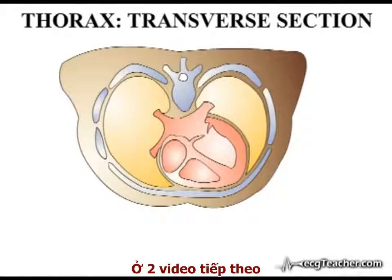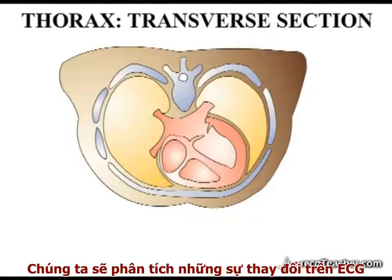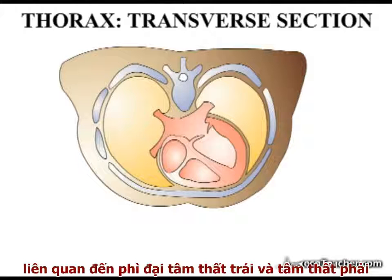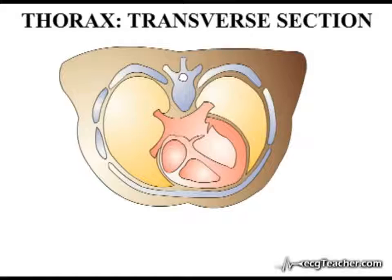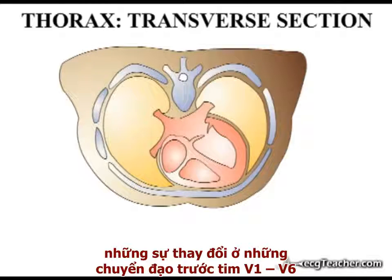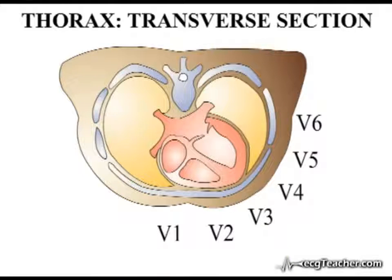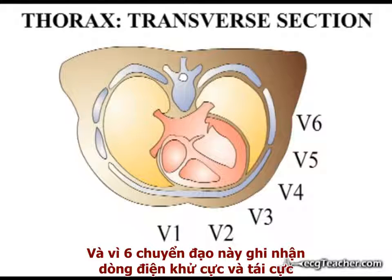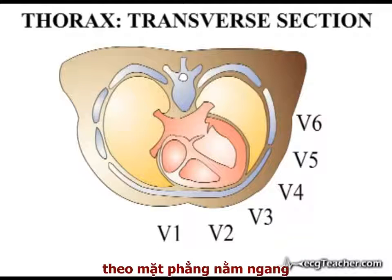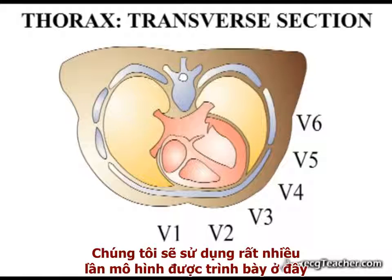In the two videos which follow, we will analyze the ECG changes associated with left and right ventricular hypertrophy. We will focus in the main on the changes produced in the readout from the precordial leads V1 to V6, and as these six chest leads examine the flow of depolarization and repolarization in the horizontal plane, we will make a great deal of use of the diagram shown here.